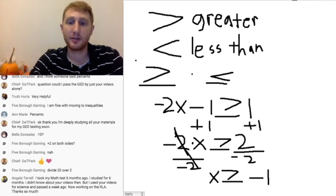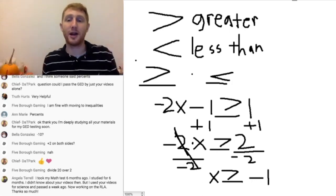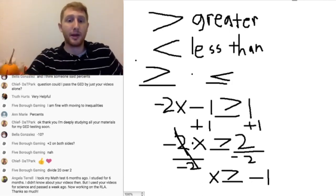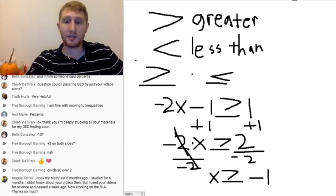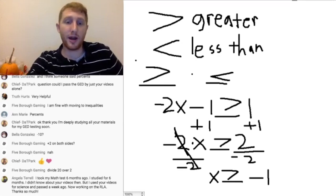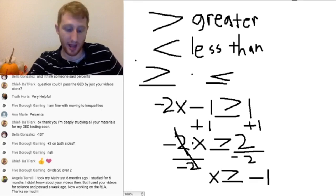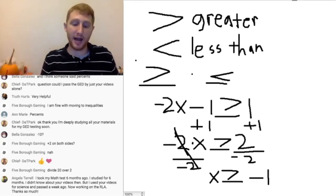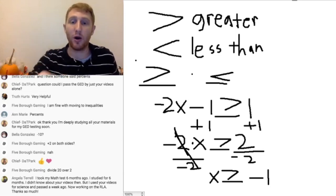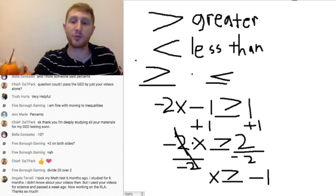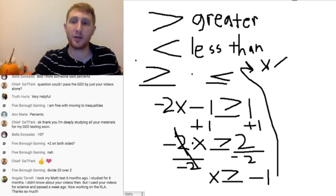So is that the right answer? Does anybody know — did we solve it correctly? Is x greater than or equal to negative 1 the right answer? Here's the kicker — this is the tricky thing about inequalities. Remember, when you multiply or divide both sides by a negative number, you have to reverse the inequality. We divided both sides by negative 2, so we have to reverse the sign. The answer is x is less than or equal to negative 1.